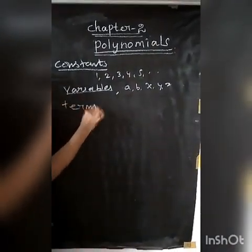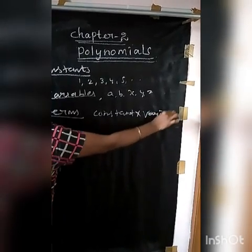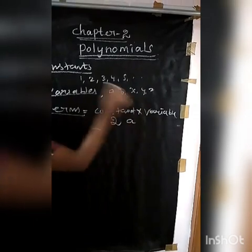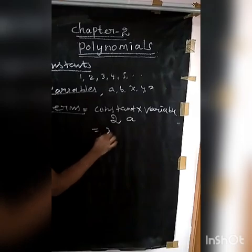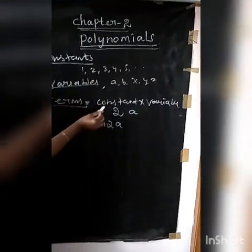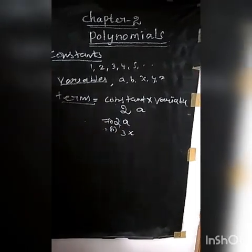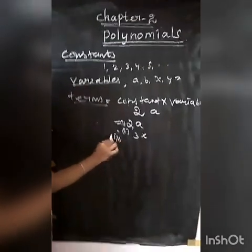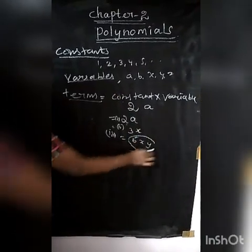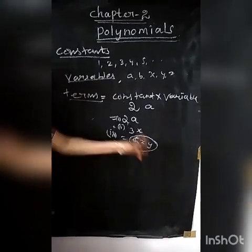Next, terms. A term is a constant or a constant multiplied by a variable. For example, 2 into A is also one term. Another example: 3 into one variable X gives 3X. You can also write two variables together — for example, constant 5 with variables X and Y gives the term 5XY. That is also called one term.